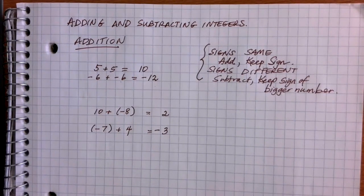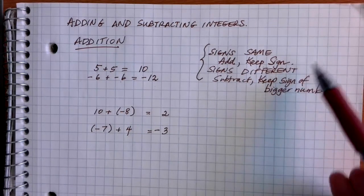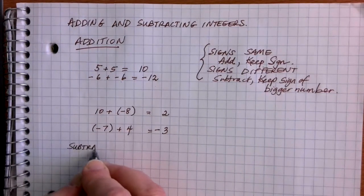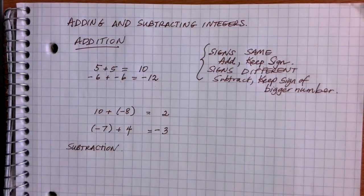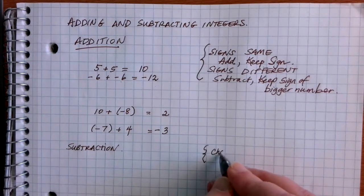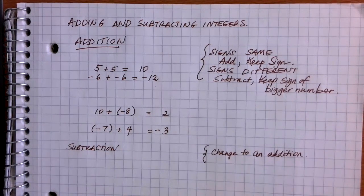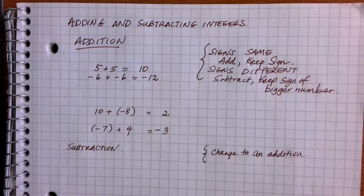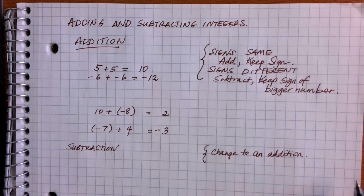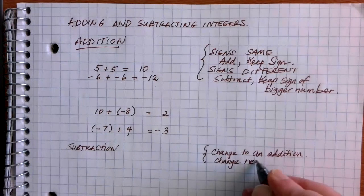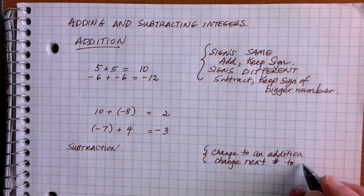Those are the rules for addition. When adding, sometimes we add and sometimes we subtract. So what do we do if it's a subtraction problem? We want to change our subtraction problem to an addition problem — similar to how with fractions, dividing was changed to multiplication using a reciprocal. Here, when we change to an addition problem, we also need to change the sign of the number that comes after the operation.